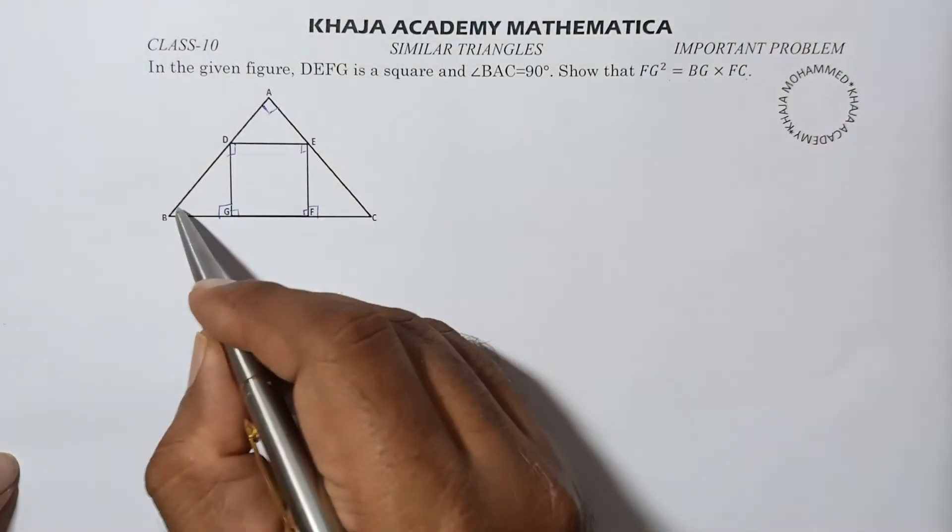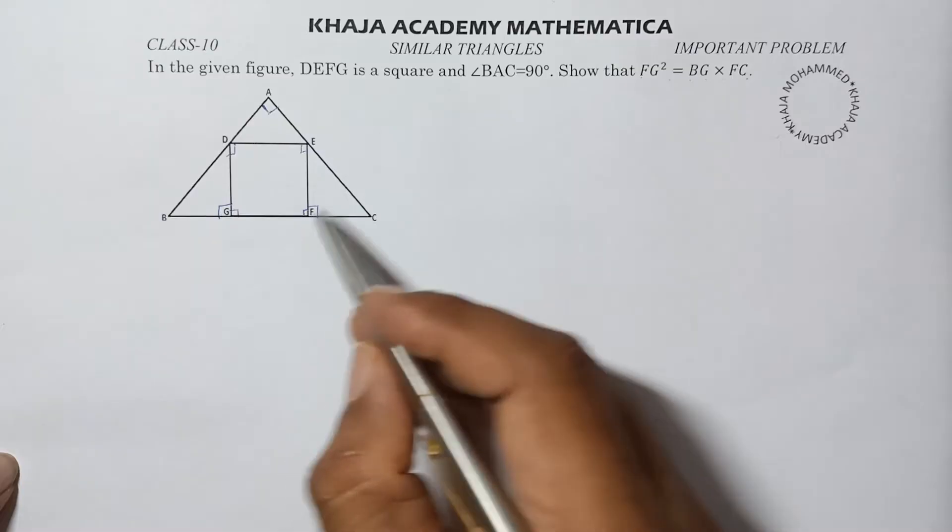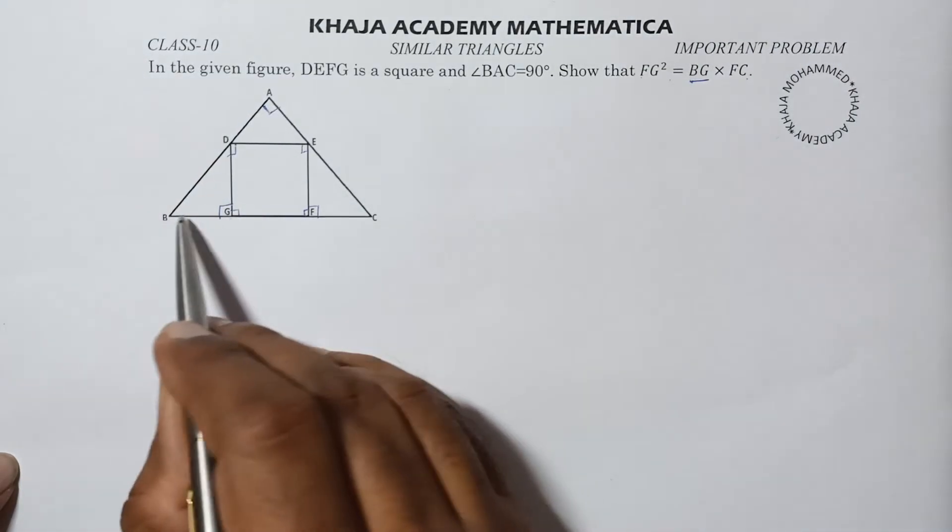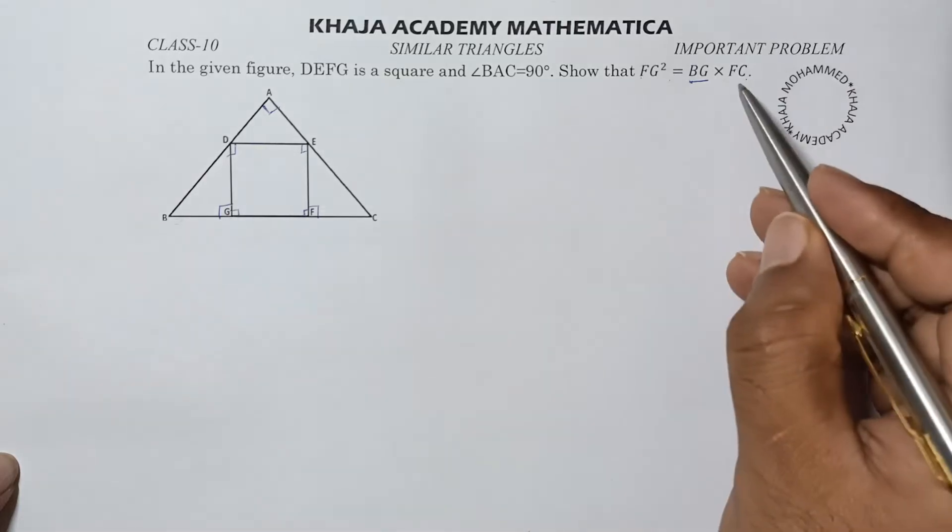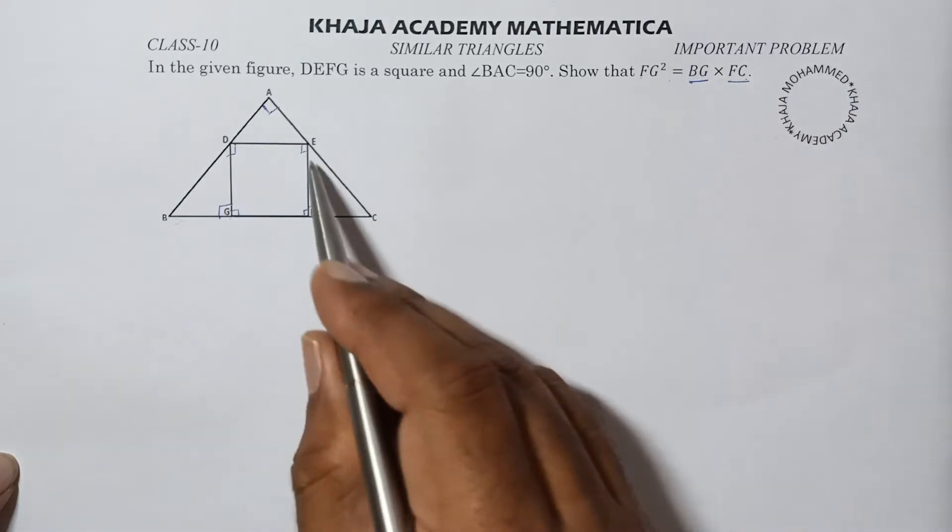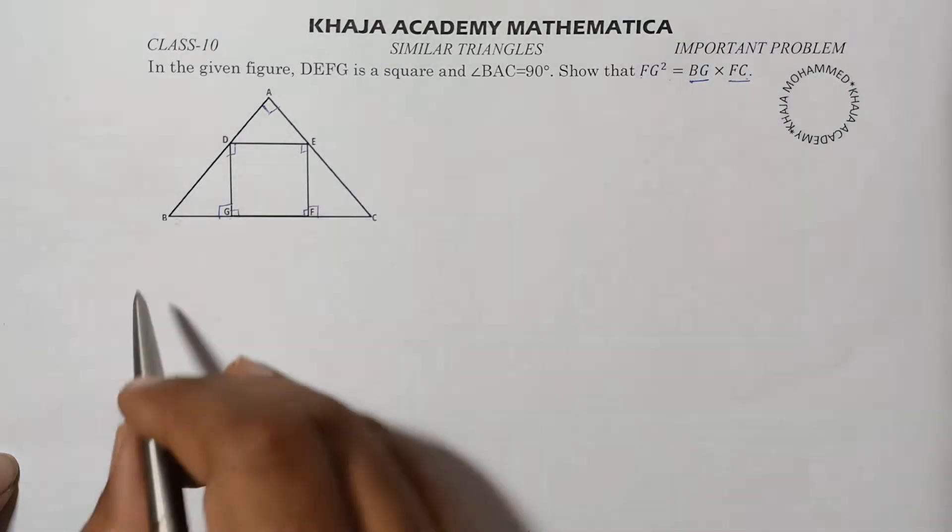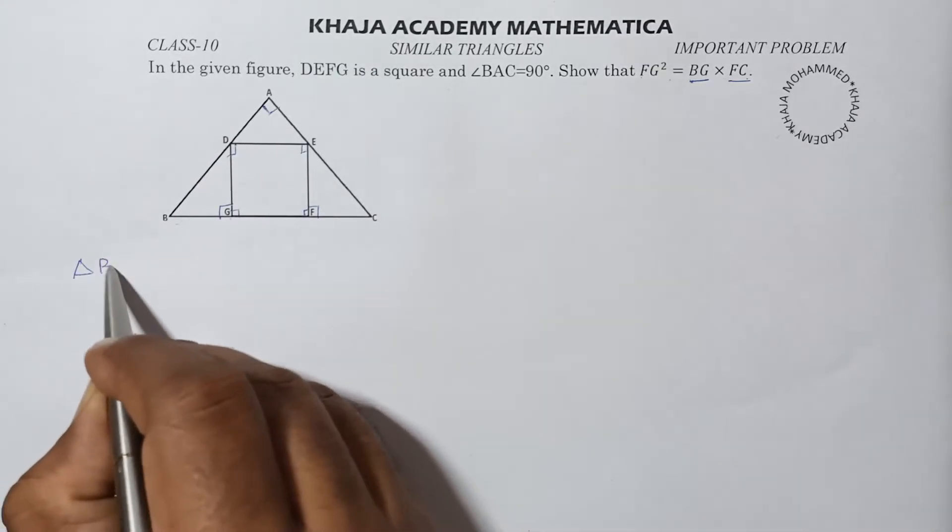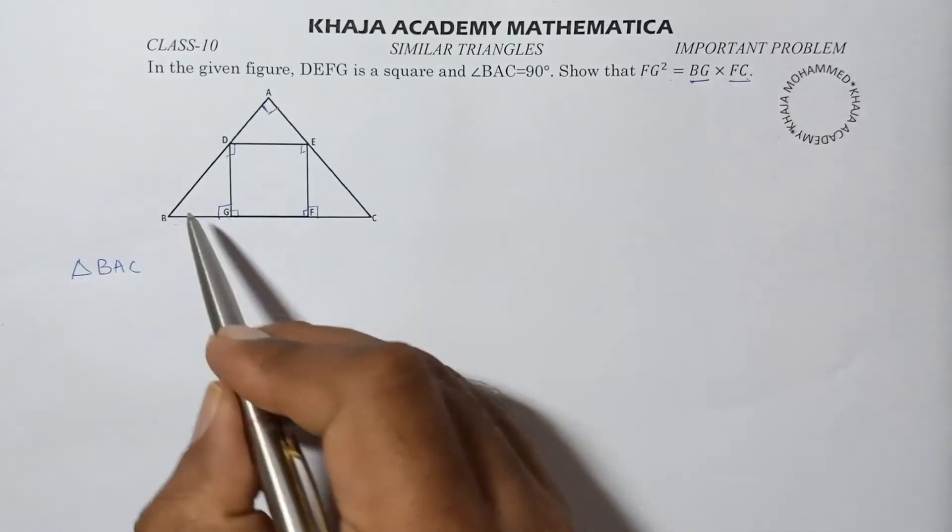First, take this big triangle BAC. You need BG, so take this triangle. You need FC, so take this right angle triangle. So triangle BAC, this big triangle, and this small triangle.